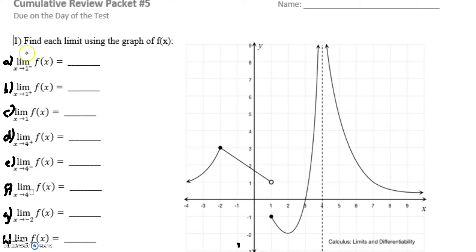If I'm looking at this limit, this means that I'm approaching the x value of one from the left side. Remember that limits are really y values — what y value am I approaching? So if I look at this graph from the left and follow it through, as I approach positive one, my graph never hits one exactly but is approaching the y value of one. So my limit answer is positive one going from the left.